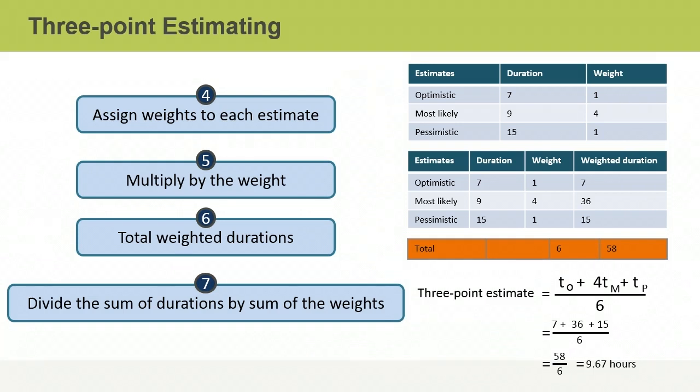In the final step of the process, you divide the sum of the weighted durations by the sum of the weights. The result is the 3-point duration estimate. In this example, the sum of the weighted durations is 58. The sum of the weights is 4 plus 1 plus 1, which is equal to 6. You then divide 58 by 6, which gives you a 3-point duration estimate of 9.67 hours.